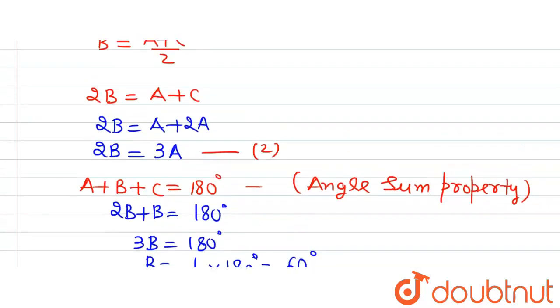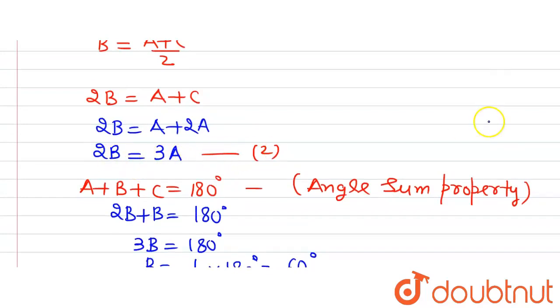So one of the angles has been found, that B is equal to 60 degrees. Now let's put value of B in equation 2.